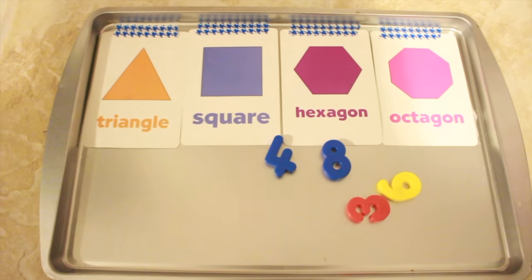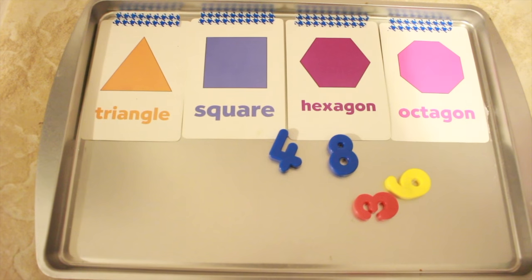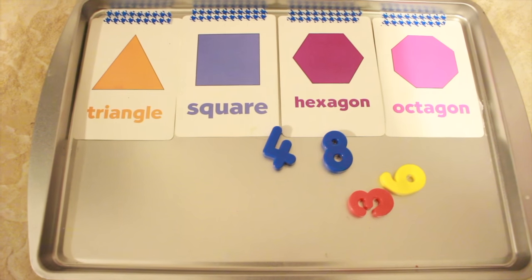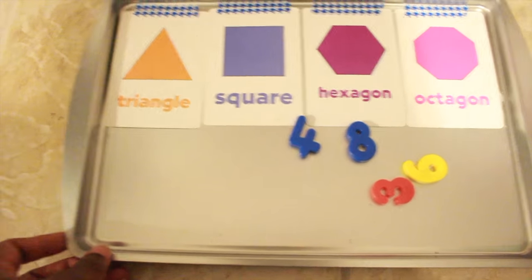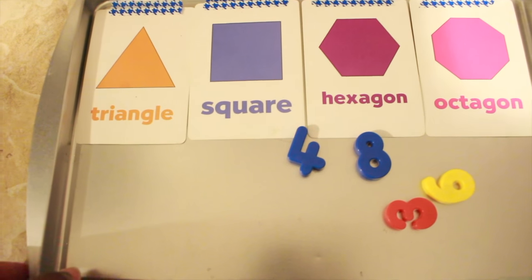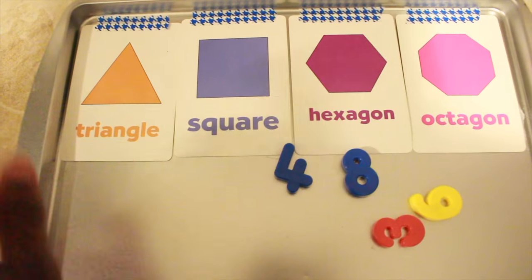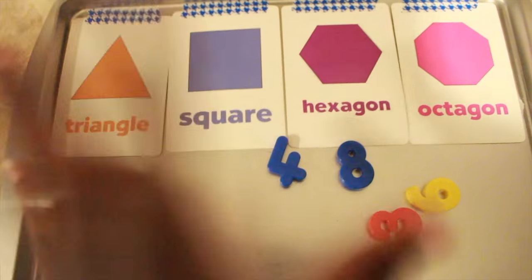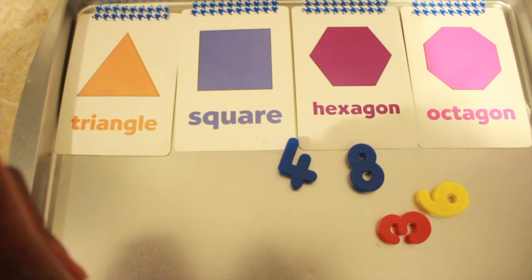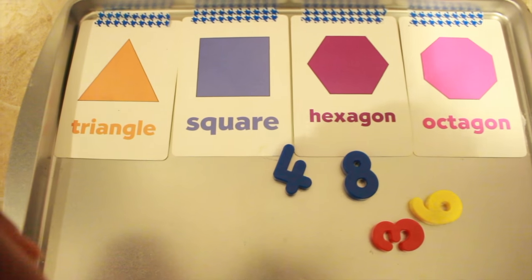With this tray, really simple, some Dollar Tree shapes cards that I'd gotten from a while ago and some magnets, and that's it on a Dollar Tree magnetic cookie sheet. And what we did was just go over every single day, what shape is this? He'd tell me triangle, square, hexagon, octagon. So he was able to identify the shapes. And then we started talking about the number of sides each shape has.